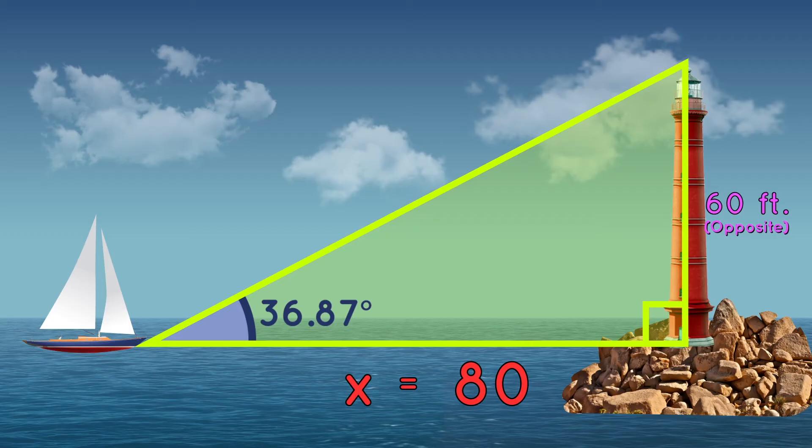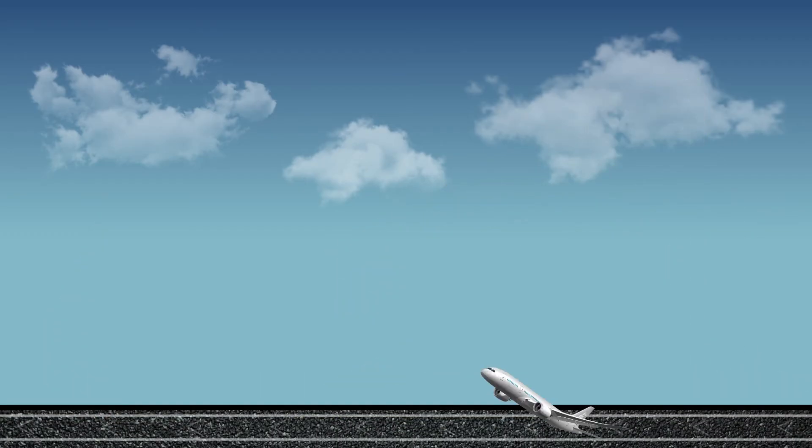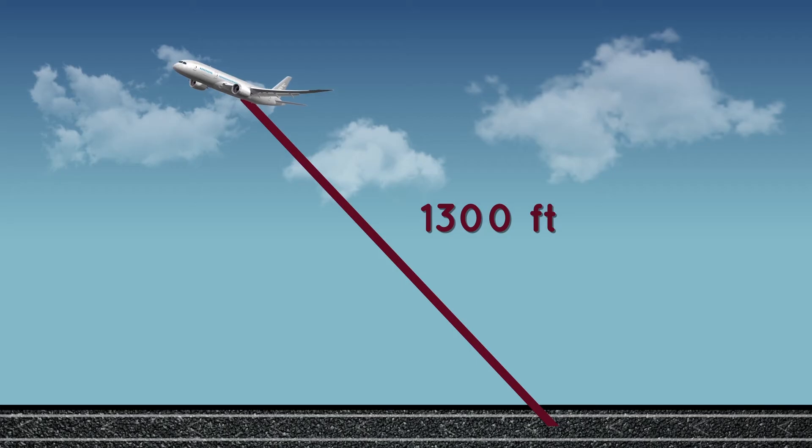See? Pretty useful. How about this one? A plane takes off from the ground and has flown 1,300 feet. We know the plane is making an angle of 67.38 degrees with the ground. So how high is the plane?